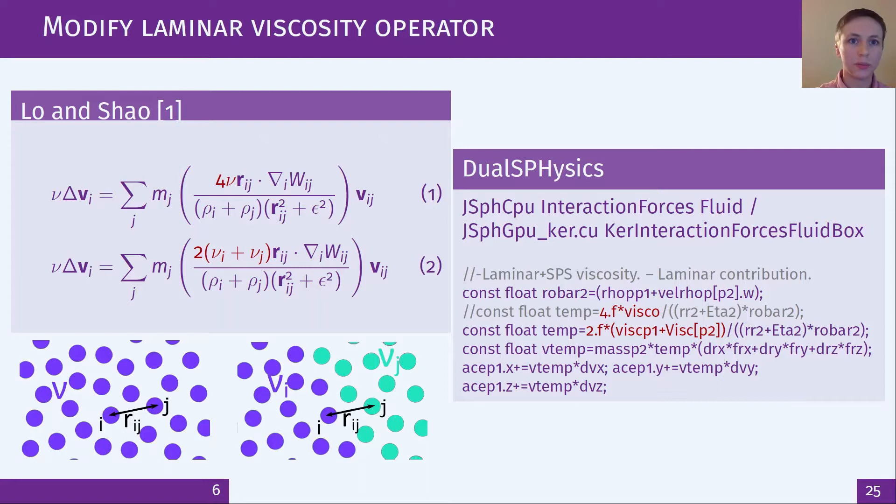Next to modify the laminar viscosity operator so that it can take into account the possibility of interacting particles that can have different viscosities. So here I take the arithmetic mean of the two viscosities of the interacting particles and note that it reduces back to the original when the interacting particles have the same viscosity. Here is the implementation of the viscosity operator in DualSPHysics for a CPU function. Here's the line of code that's been changed and highlighted where it takes the viscosities of the two particles that are interacting.